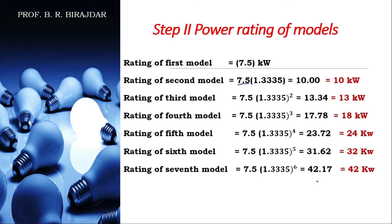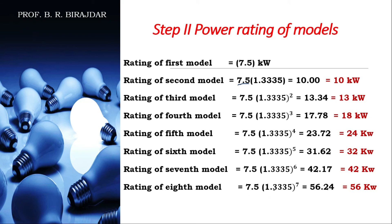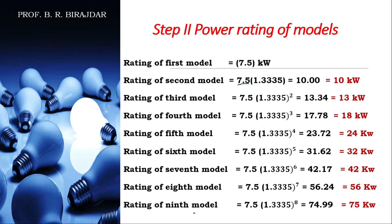The seventh model is 7.5 × 1.3335⁶ = 42.17, rounded to 42 kilowatt. The eighth model is 7.5 × 1.3335⁷ = 56.24, rounded to 56 kilowatt. The ninth model is 7.5 × 1.3335⁸ = 74.99, rounded to 75 kilowatt. So the nine models are: 7.5, 10, 13, 18, 24, 32, 42, 56, and 75 kilowatt.